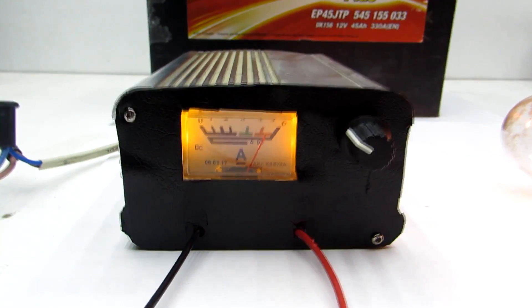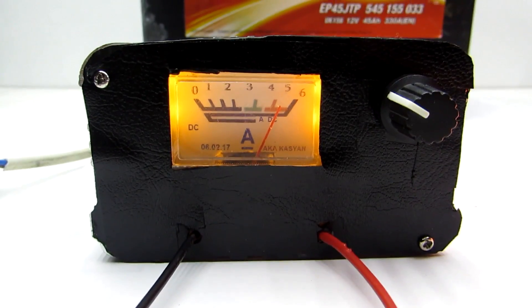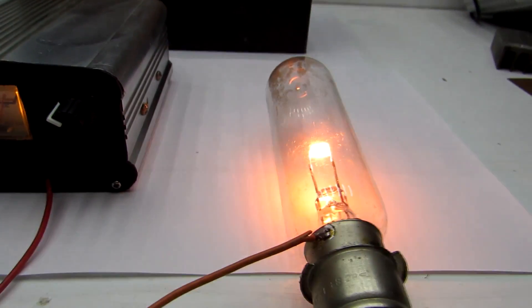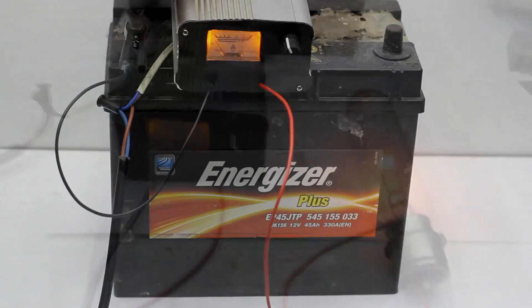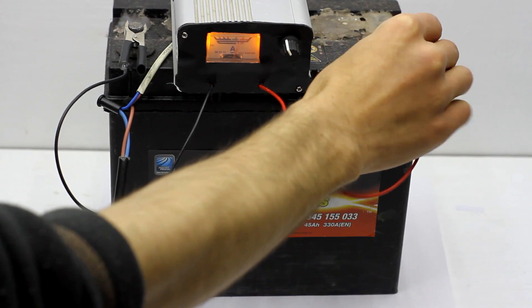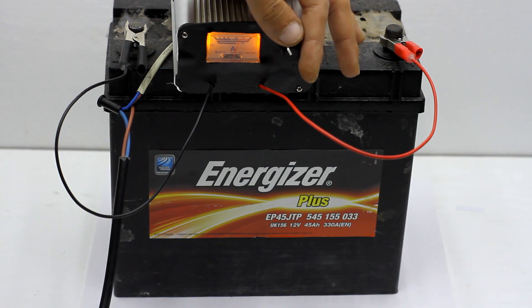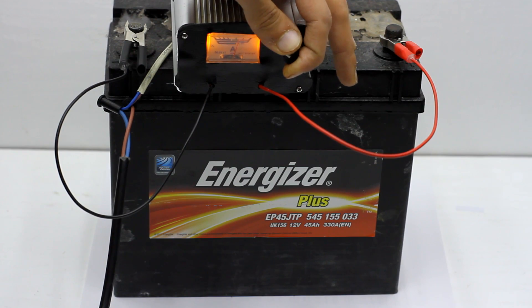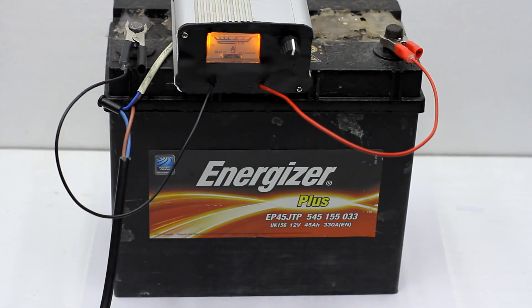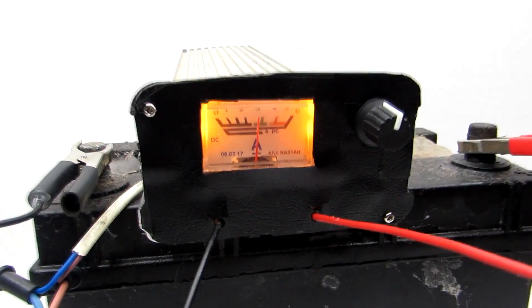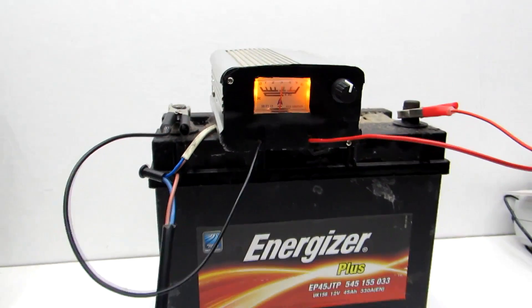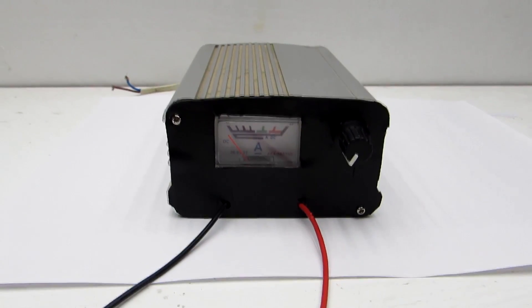It remains only to check the operation with the car battery. You can see that the charging has started, the current is regulated, and in general, everything is normal. During the charging, current gradually will drop to zero.